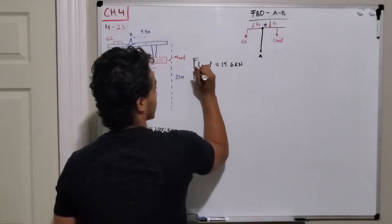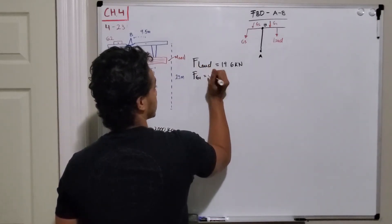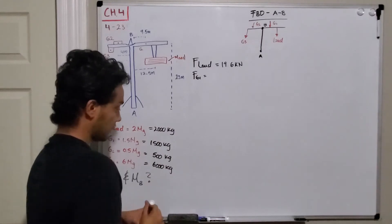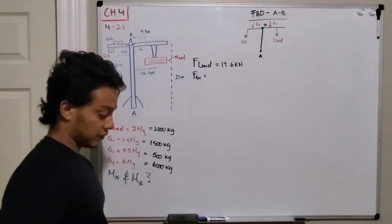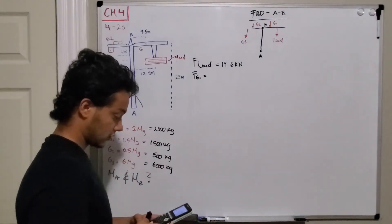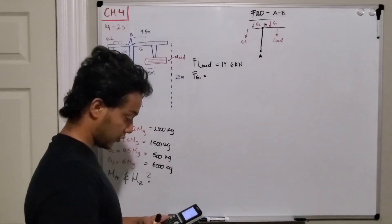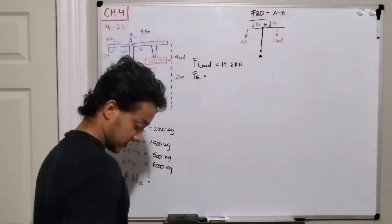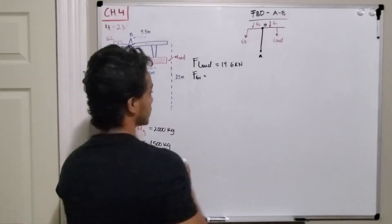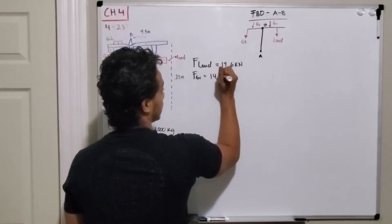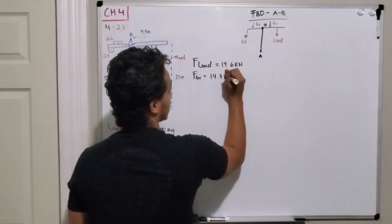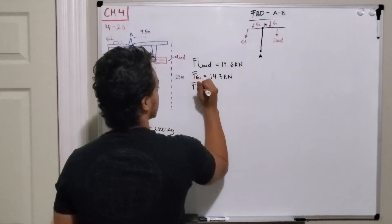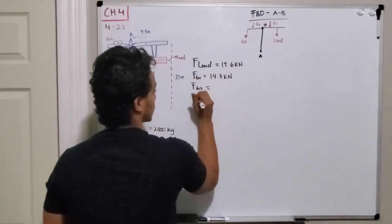For the force of G1, we do 1,500 kilograms multiplied by 9.81, which gives us 14.7 kilonewtons.